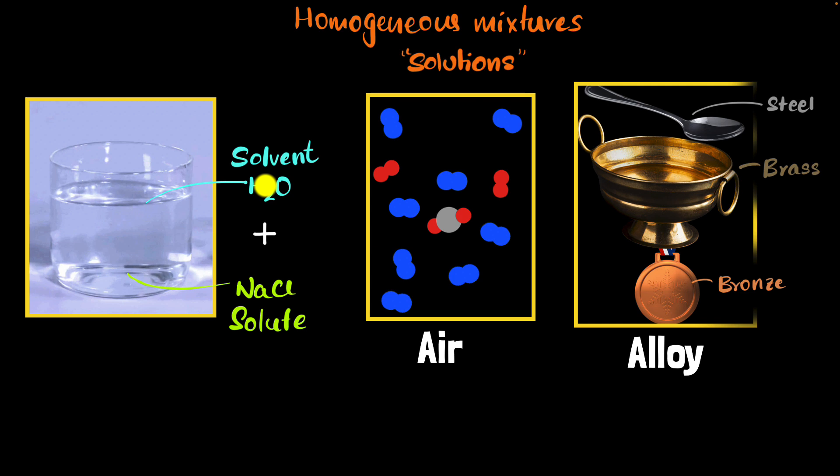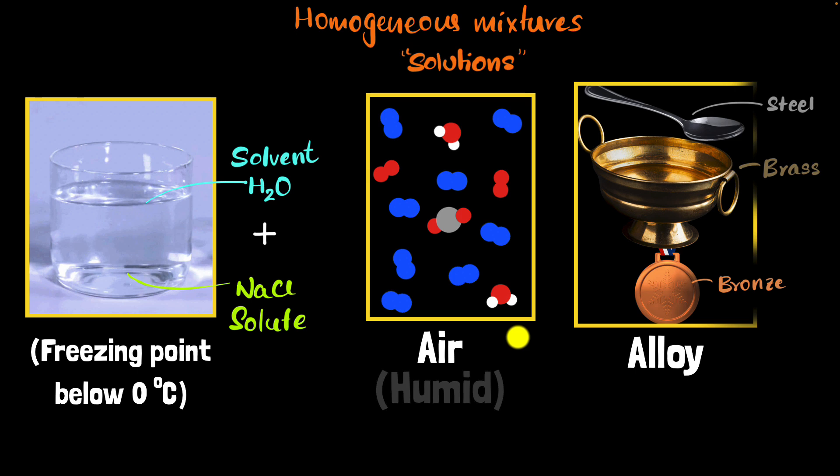For example, usually water freezes at about 0 degree Celsius. But guess what? When you add salt to it, the freezing point of this solution is below 0 degree Celsius. Similarly, if there is water molecules in the air, we say there is humidity. A lot of water molecules means there is a lot of humidity. Humidity changes the properties of the air. For example, the speed of sound changes, its density changes, and so on.